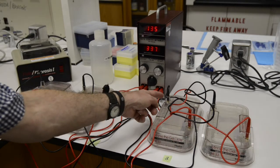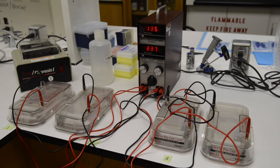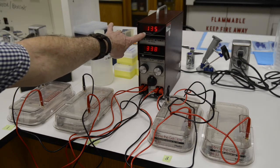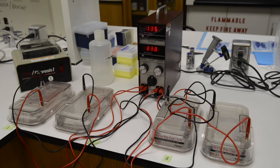Once the gel is loaded, then put the cap on the running tray. You can see the wells are farthest away from me here. That's where the negative terminal should be because DNA is going to move from the negative terminal toward the positive terminal.